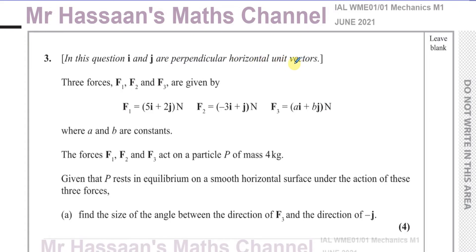Three forces F1, F2 and F3 are given by F1 equals 5i plus 2j newtons, F2 minus 3i plus j newtons and F3 ai plus bj newtons, where a and b are constants. The forces F1, F2 and F3 act on a particle P of mass 4 kilograms. Given that P rests in equilibrium on a smooth horizontal surface under the action of these three forces, find the size and angle between the direction of F3 and the direction of minus j.